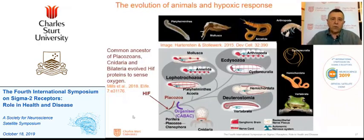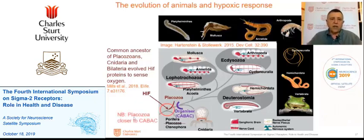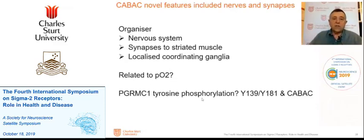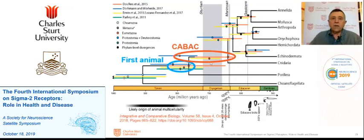Looking at animal evolution: HIF-1α was acquired by the placozoans, so all animals above that have it. The organiser was acquired later, and all those animals have it — placozoans don't have an organiser but all others do. The nervous system defines synapses to striated muscle and localised coordinating ganglia. Is this related to oxygen tension and PGRMC1 tyrosines 139 and 180?